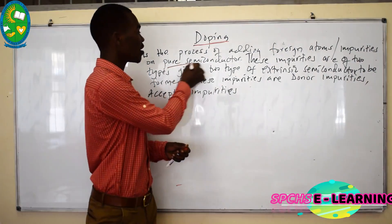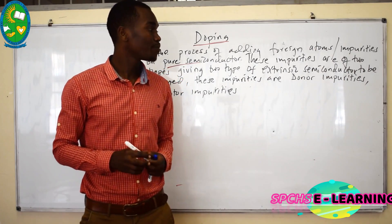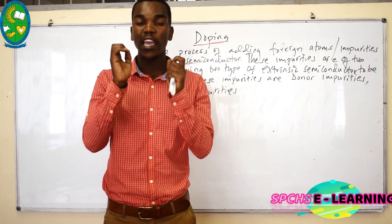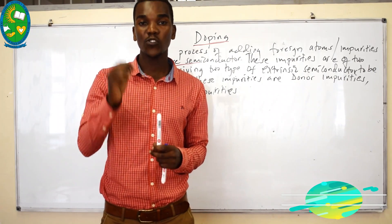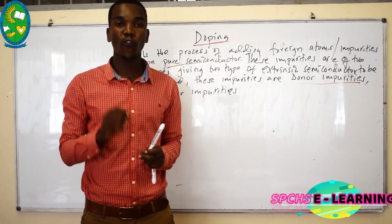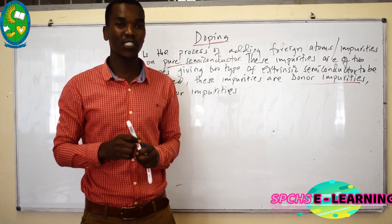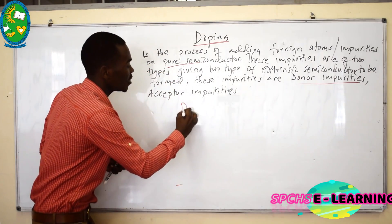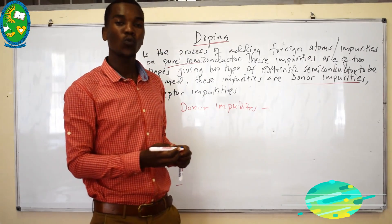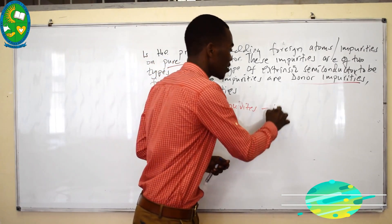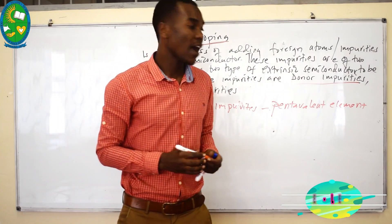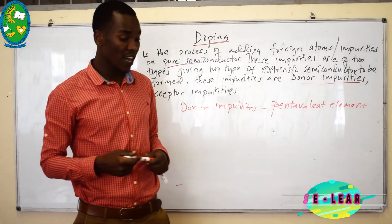The pure semiconductors being discussed here are intrinsic semiconductors. There are two types of impurities. Some impurities add extra free electrons to the pure semiconductor — these are known as donor impurities. These donor impurities are what we call pentavalent elements.